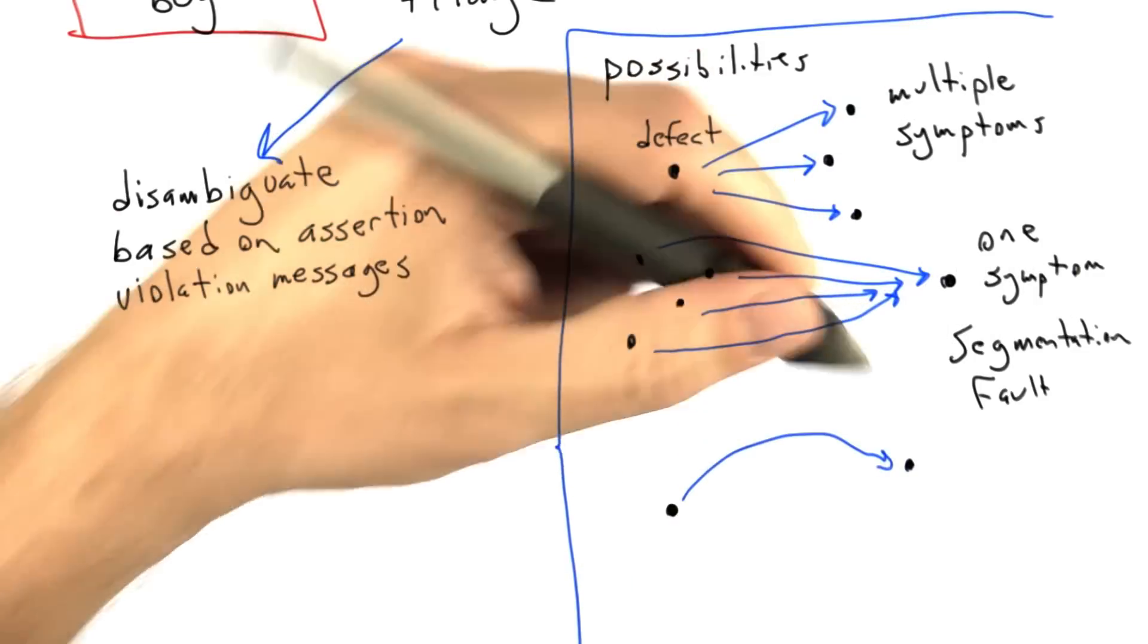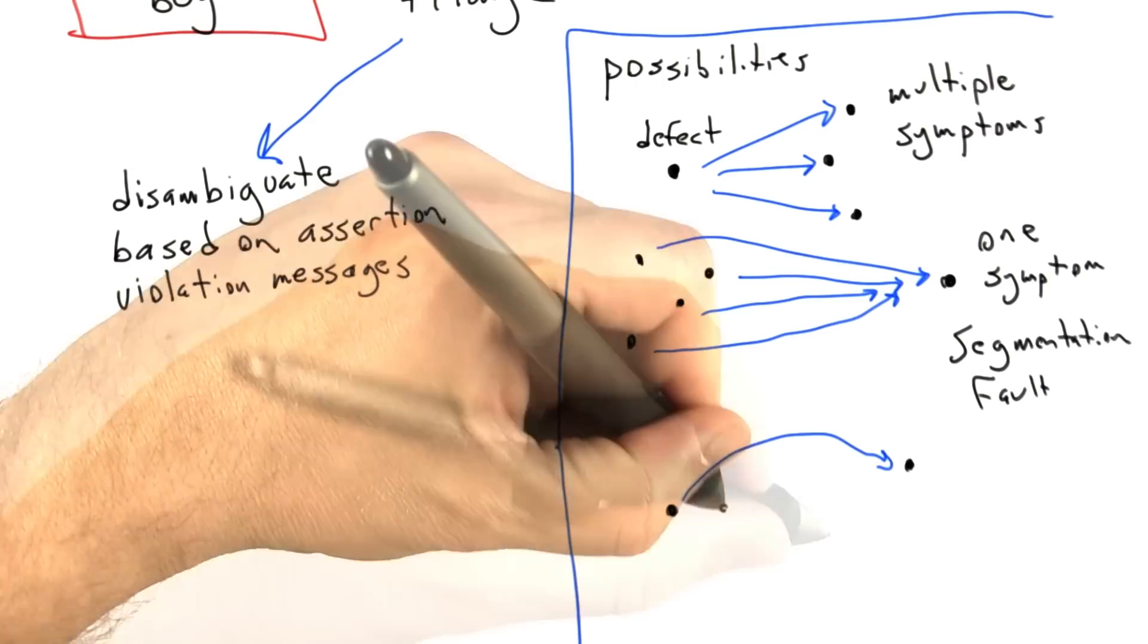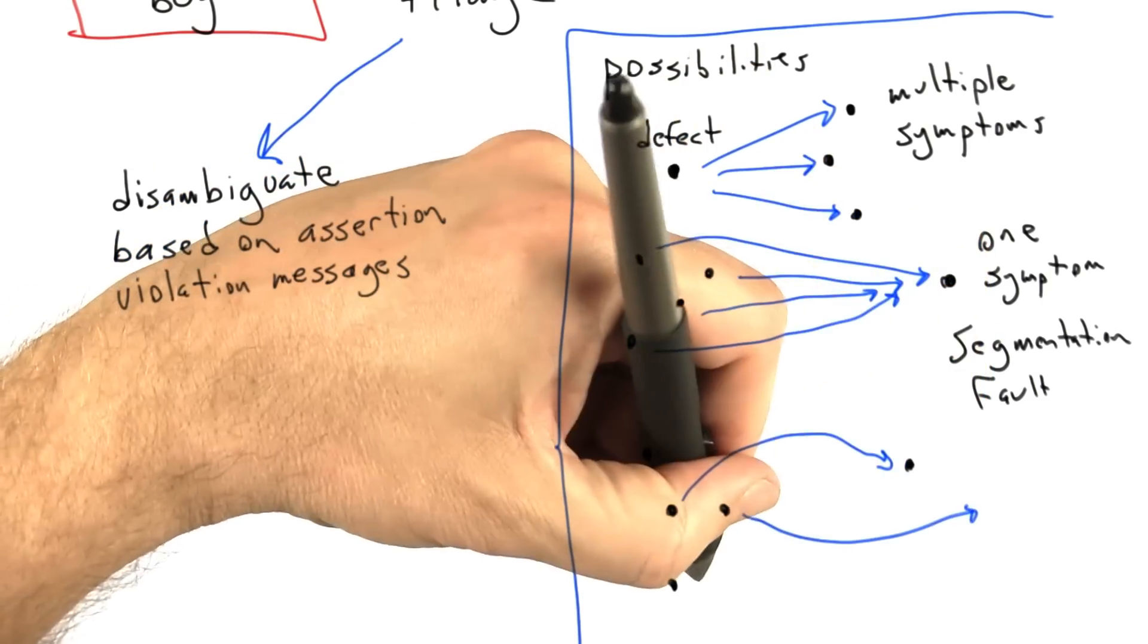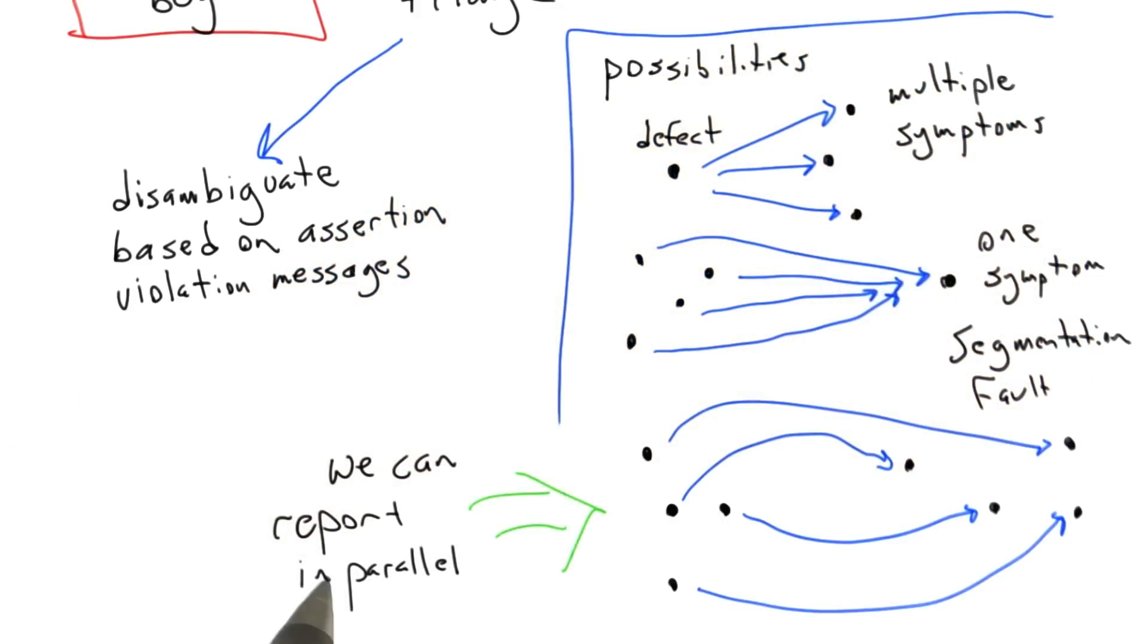In contrast with these slightly pathological cases, what we hope happens—and this is relatively common—is that a single defect maps to a single symptom. By reporting a test case leading to that symptom, we can get that defect fixed. In this case, we have many defects all mapping to their own symptoms in the output space. We can report these in parallel, and that's really nice. With large complicated software that's evolving rapidly, reporting bugs in parallel may be our only option if we want to get the number of defects under control.